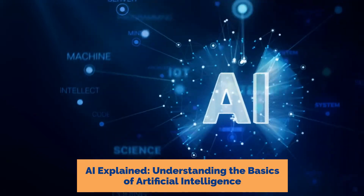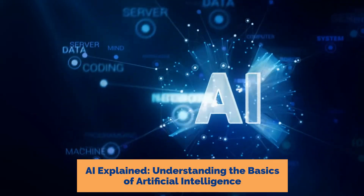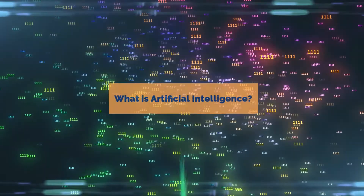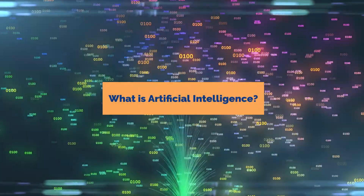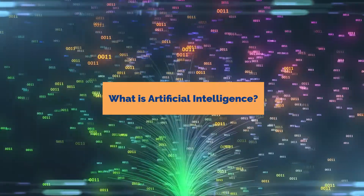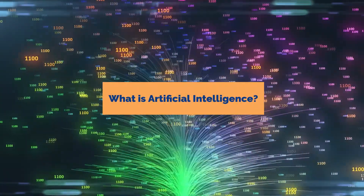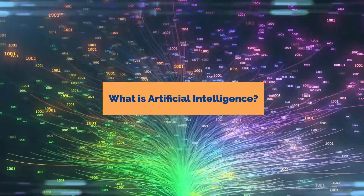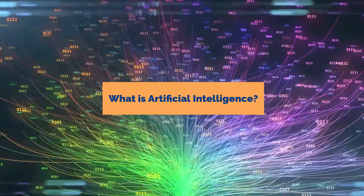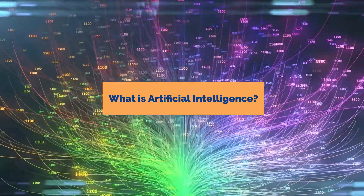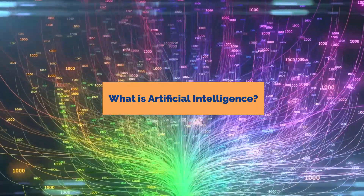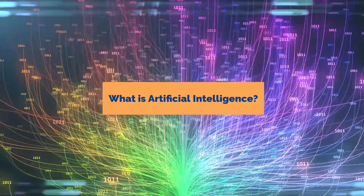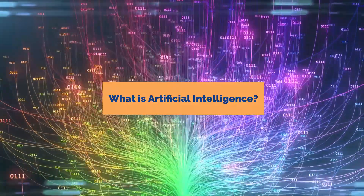Understanding the Basics of Artificial Intelligence. In 1956, the term AI was coined as a task performed by a machine or program that, where a human to do the same task, would require at least some intelligence to complete.